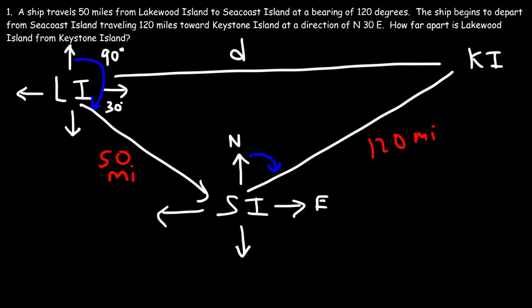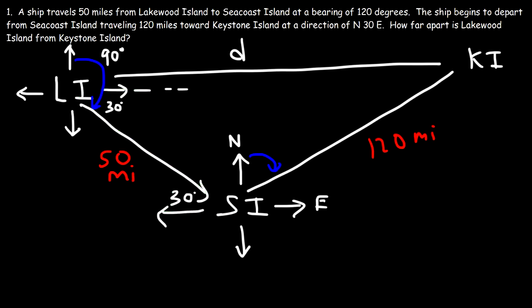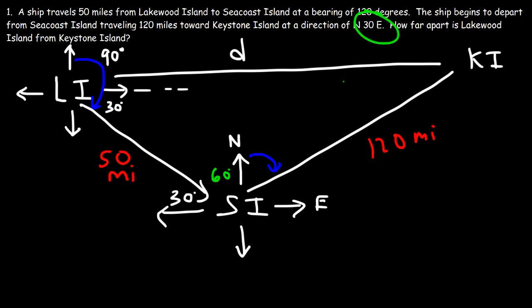The first thing I recommend doing is finding all of the interior angles of the triangle. We already have this one — that's 30. Notice the Z that's formed: these angles are alternate interior angles, so this is also 30. Between north and west, that's 90 degrees. So if this whole thing is 90 and this is 30, this part must be 60. We traveled 30 degrees east of north from Seacoast Island to Keystone Island, so that means this is 30 — which tells us that this is the right angle. We're dealing with a right triangle.